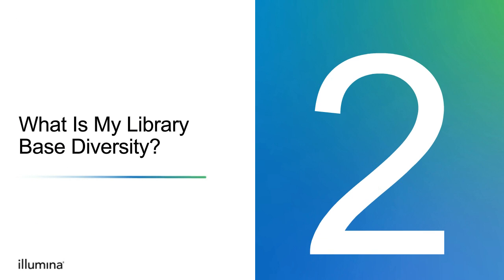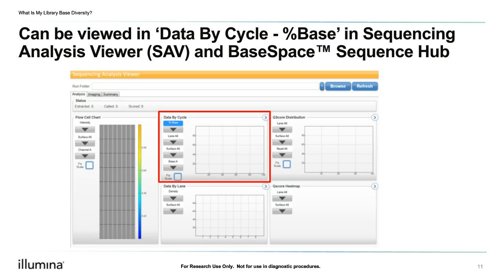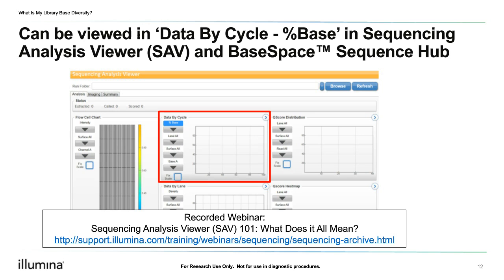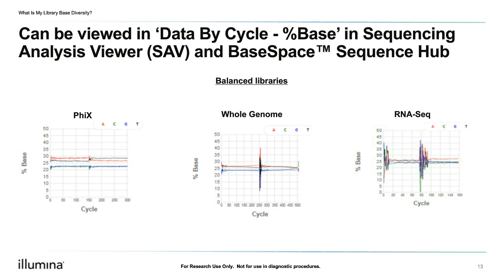Let's dive into how to tell what our library base diversity is using metrics collected during the sequencing run. To determine the library diversity from sequencing run metrics, we recommend using the data-by-cycle chart under the Analysis tab in Sequencing Analysis Viewer, or SAV, or the Charts tab of BaseSpace Sequencing Hub. Under this chart, we can use the drop-down menu — highlighted in blue — to select percent base, and then review the proportion of each base call at each cycle.